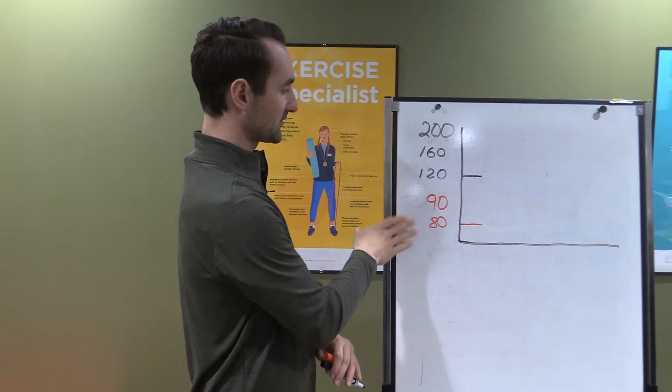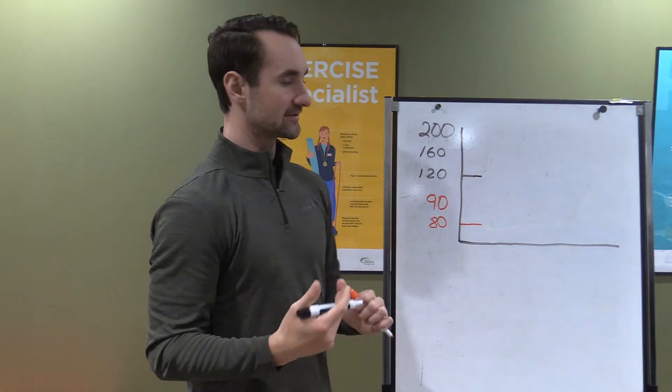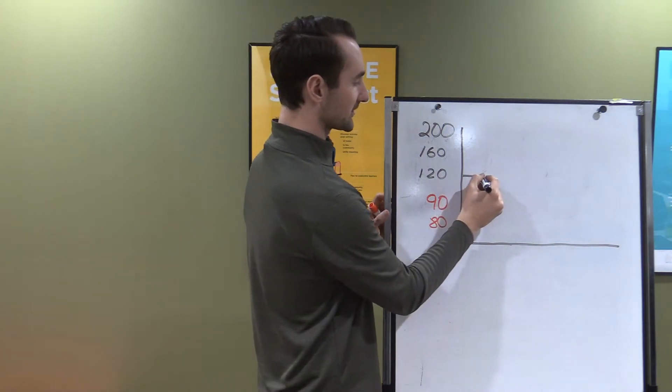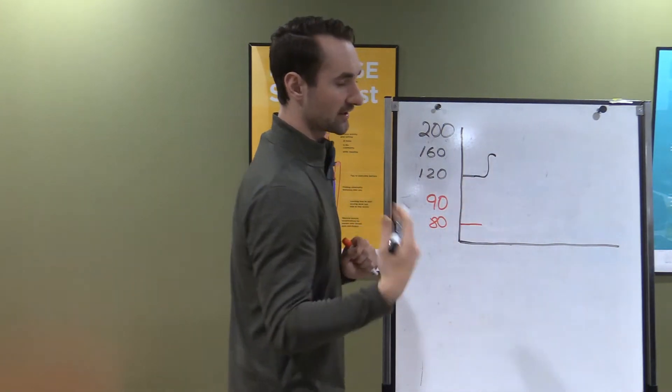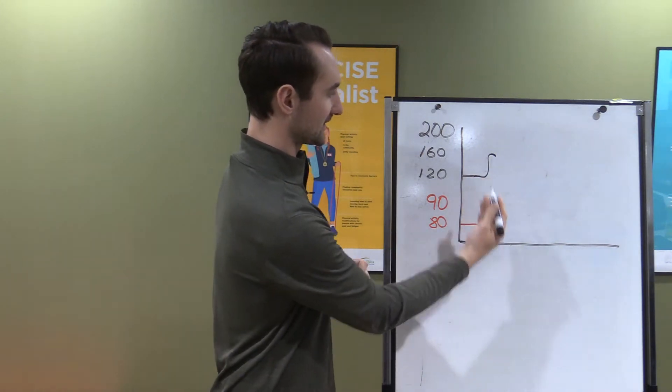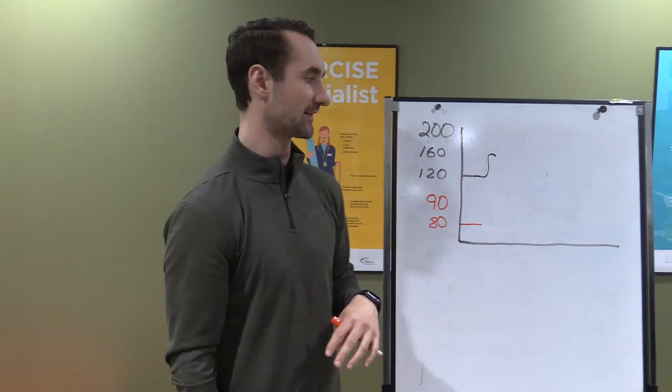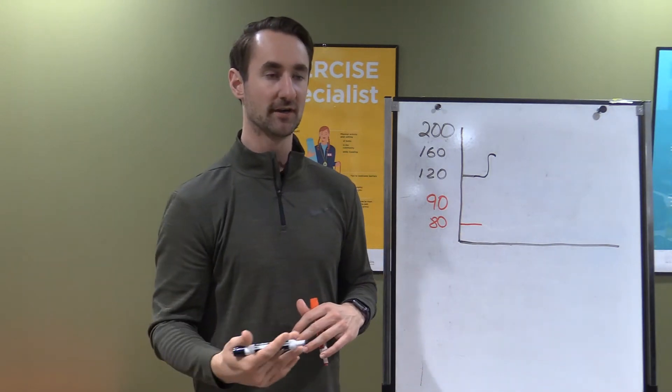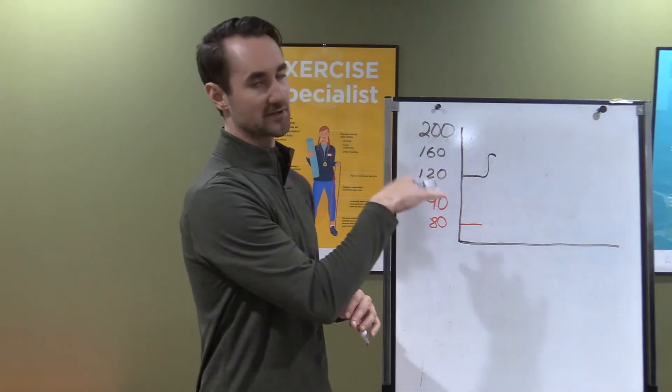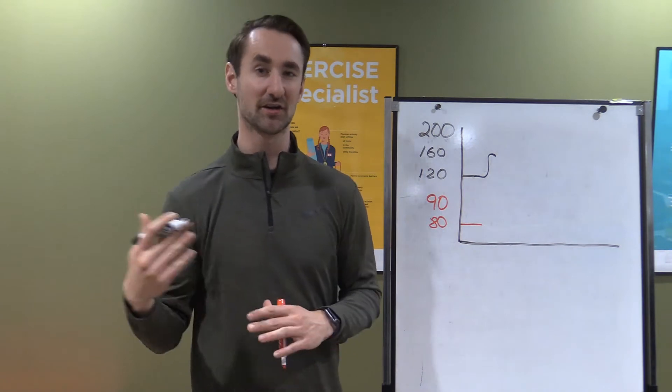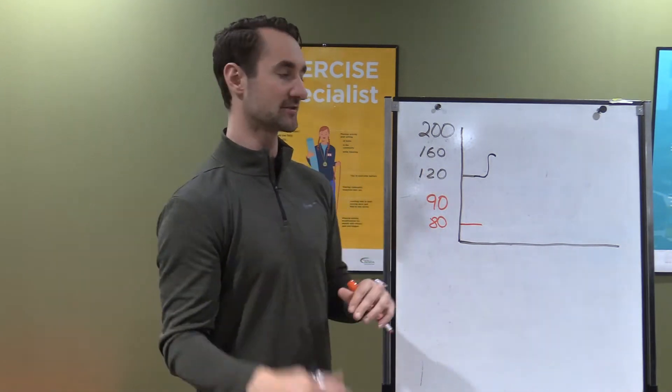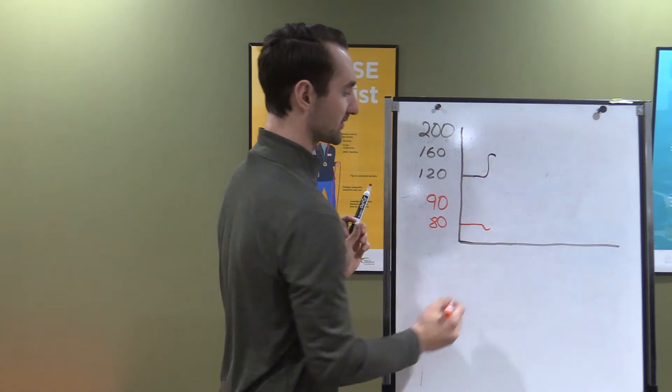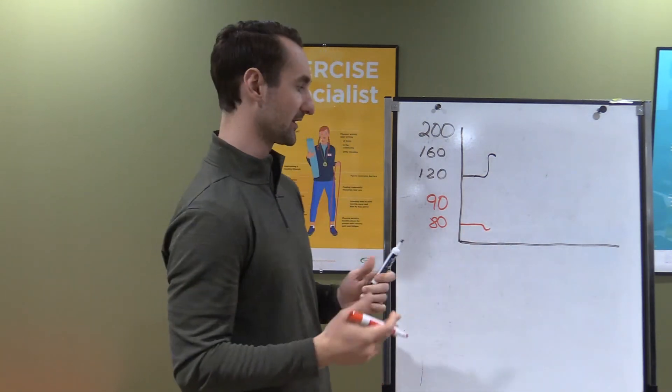So normal pressure 120 over 80, let's look at what happens during an exercise session. Your top number actually goes up during the exercise session. If you worked out for 30 minutes, depending on the intensity of the workout, your blood pressure will respond accordingly. The harder you work, the higher your blood pressure is going to get. The bottom number will go down just a little bit during the exercise session, not a ton, but a little bit.